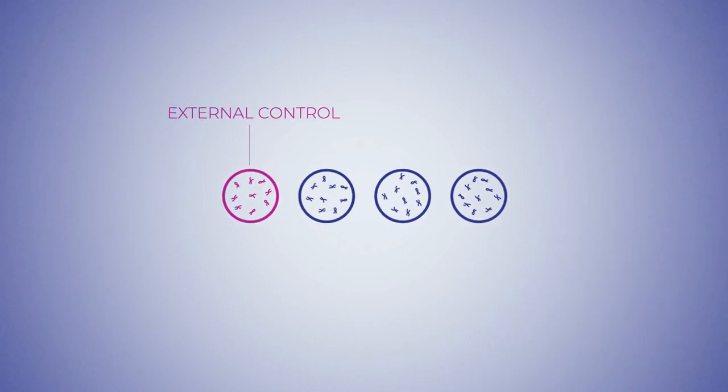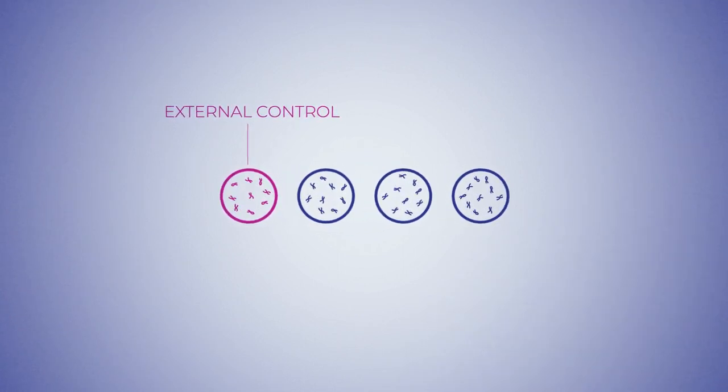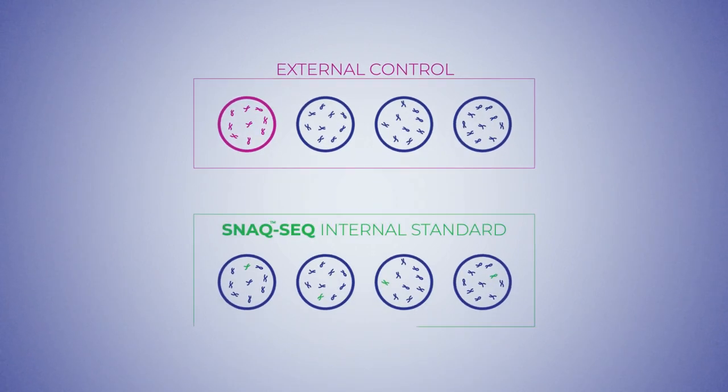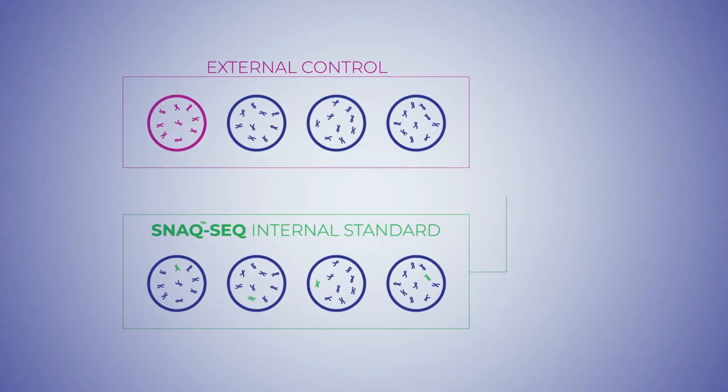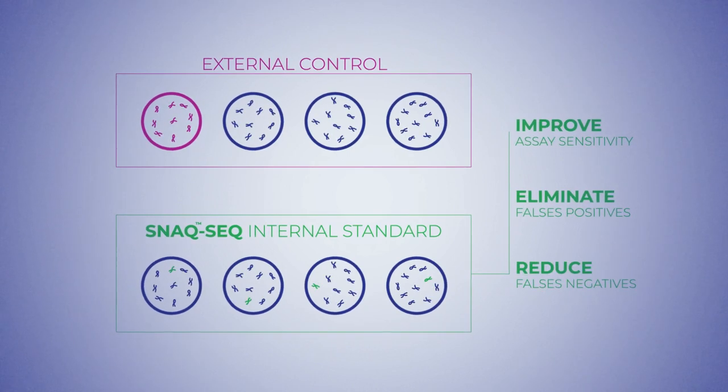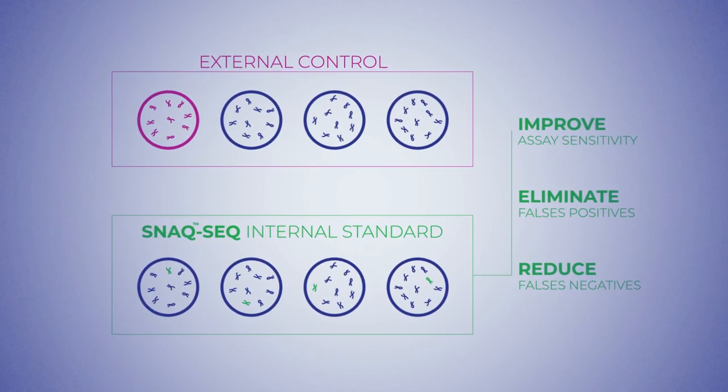Unlike external controls that occupy a flow cell and restrict sample throughput, our internal standards are added to each sample. This helps maximize the cost-effectiveness of each flow cell and the instrument and operator runtime.